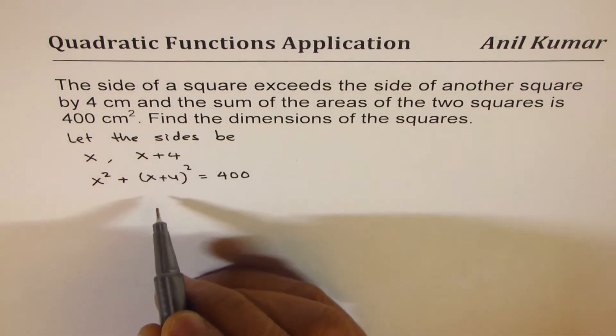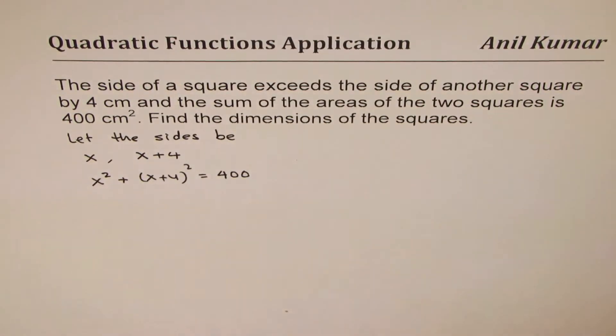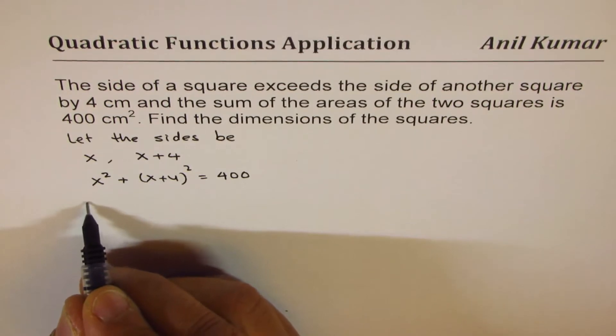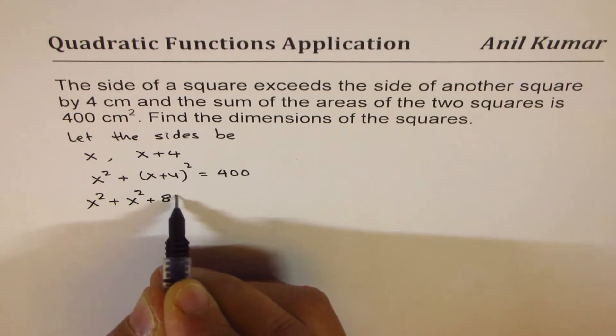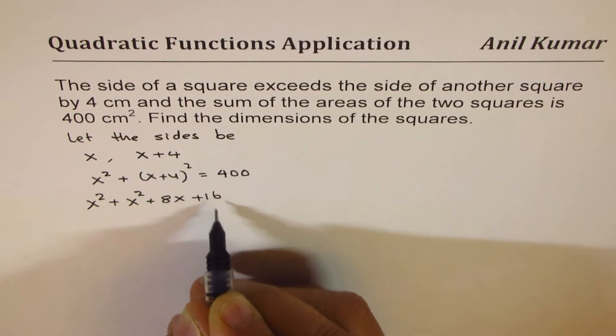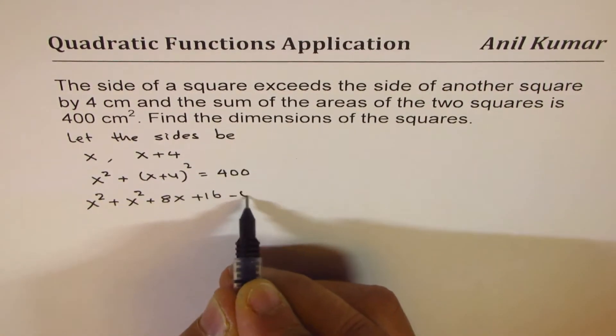Now we need to solve this. Let's expand: we have x² + x² + 2ab which is 8x + 16. We can bring 400 to this side, that is minus 400 equals 0.